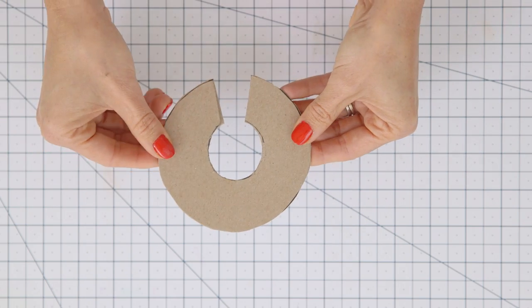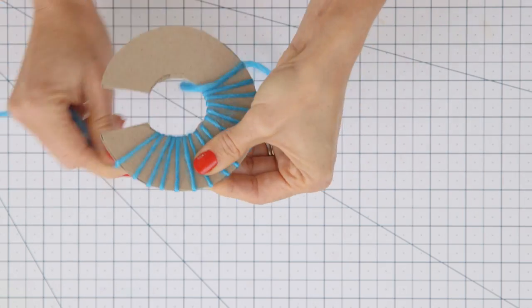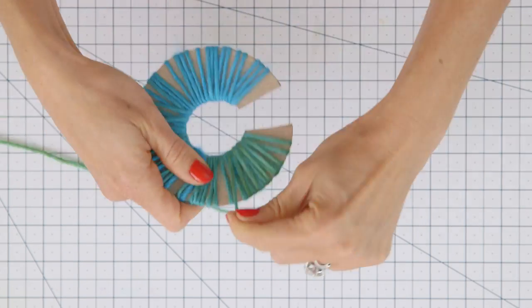Place them on top of each other and begin wrapping your yarn. I'm using this beautiful gradient rainbow yarn that I love. I've linked it in the description below, but you can use any yarn you'd like.